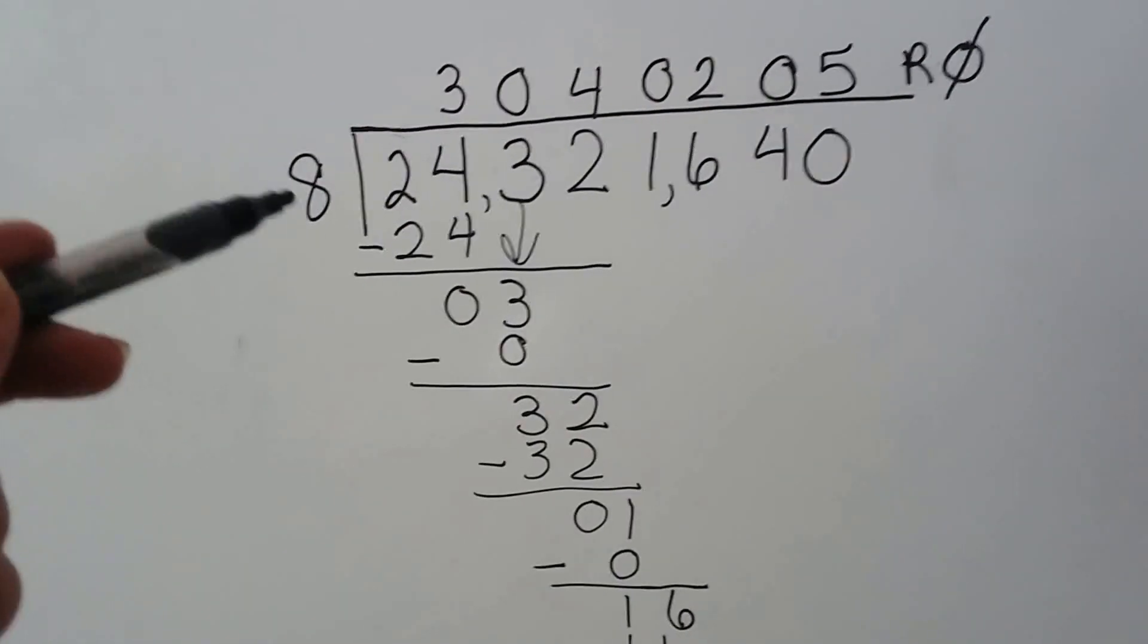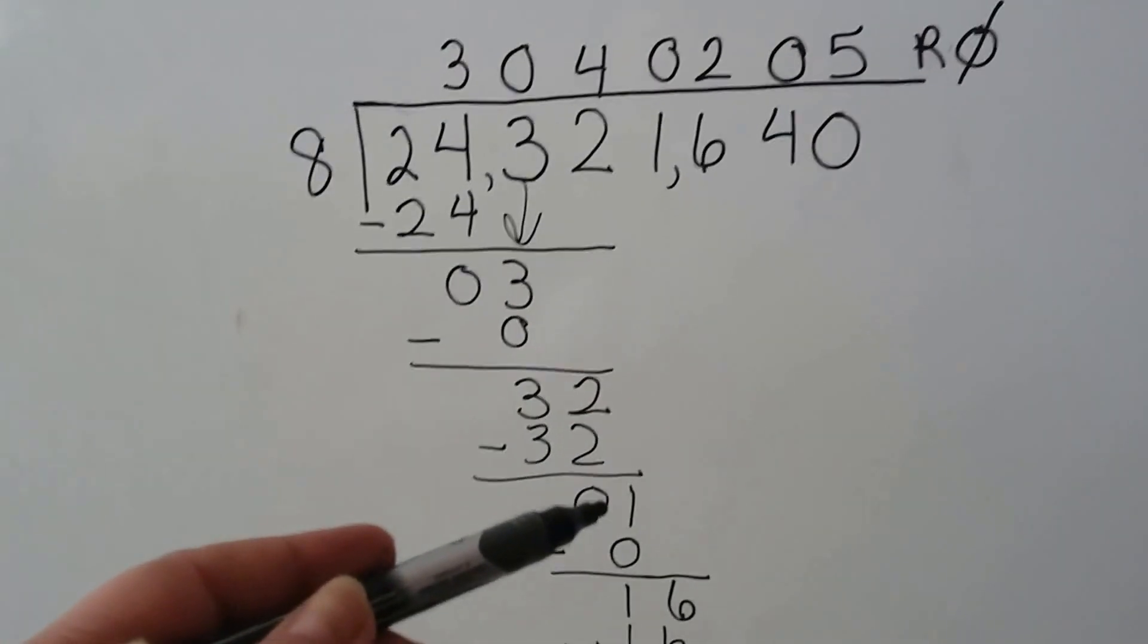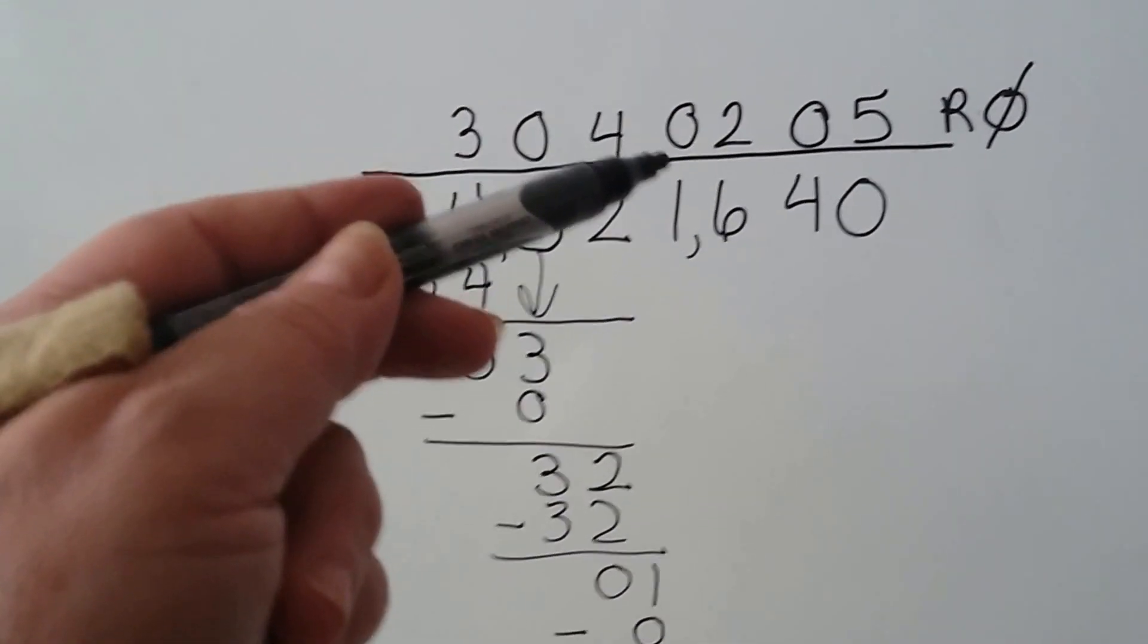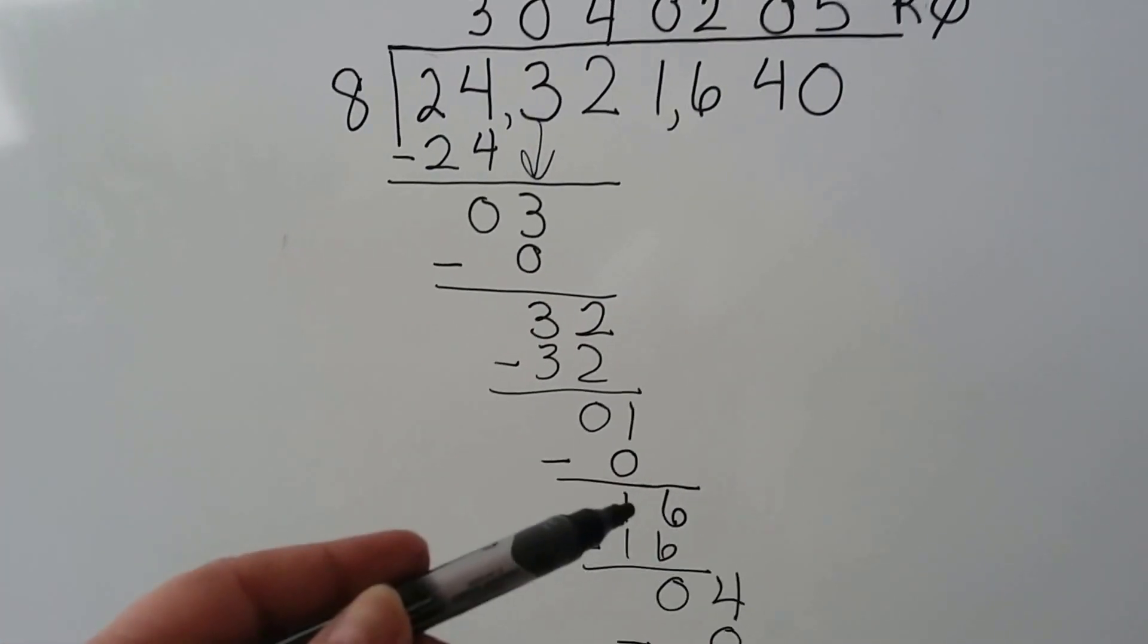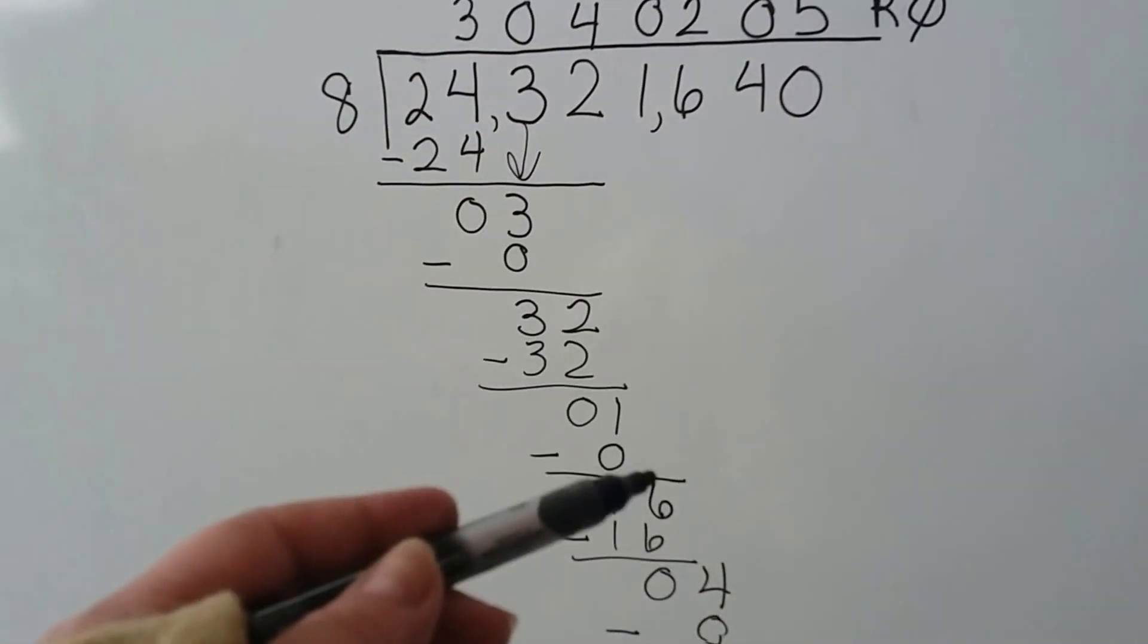We drop down our one. How many times can eight fit into one? Zero times. Eight times zero is zero. We do it again, and we drop down our one from our subtraction, and now it's the six's turn to come down.